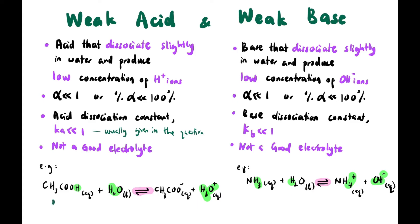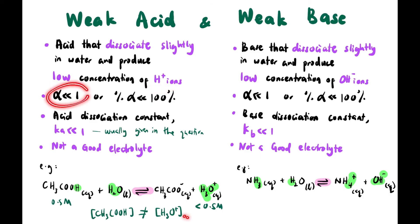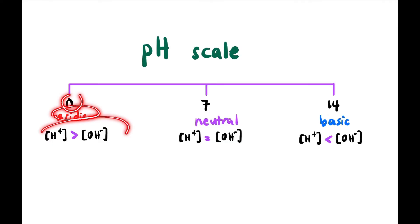For concentration: if CH₃COOH is 0.5 M, the concentration of H₃O⁺ produced is not necessarily 0.5 M — it is smaller, because it does not dissociate 100%. So the concentration of the weak acid is not equal to the concentration of H₃O⁺ produced. Likewise for a weak base: the concentration of NH₃ is not equal to the concentration of OH⁻ produced — it is smaller.